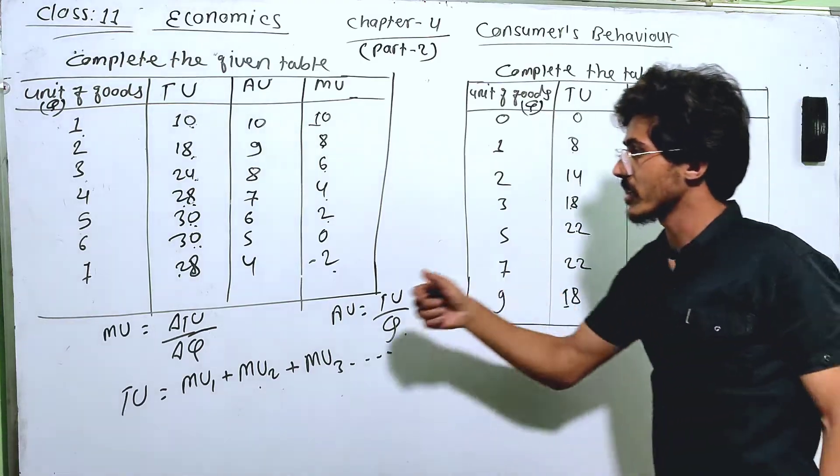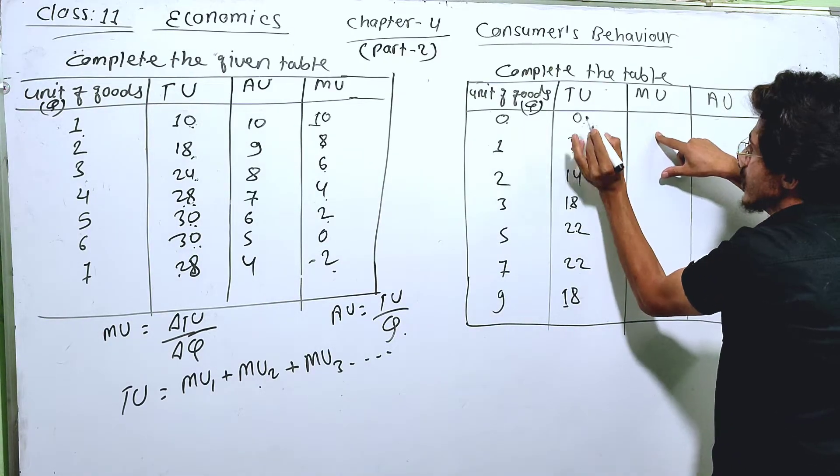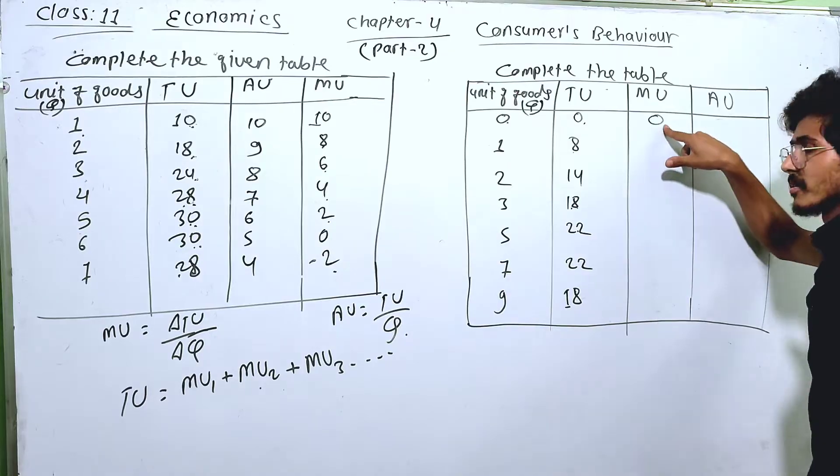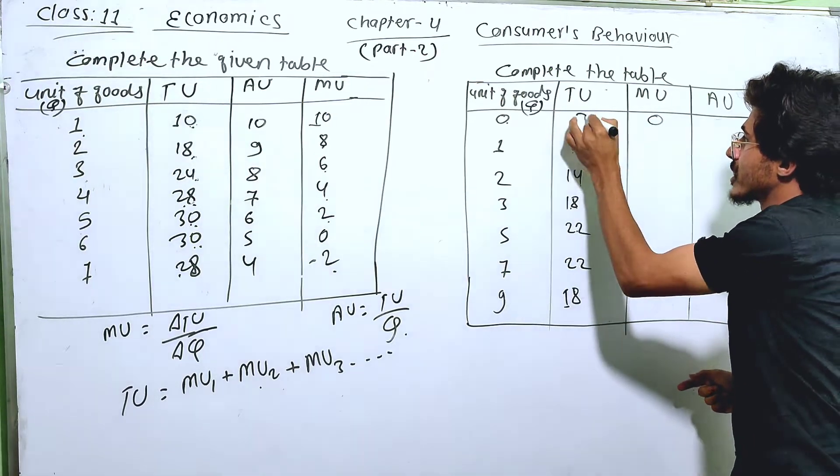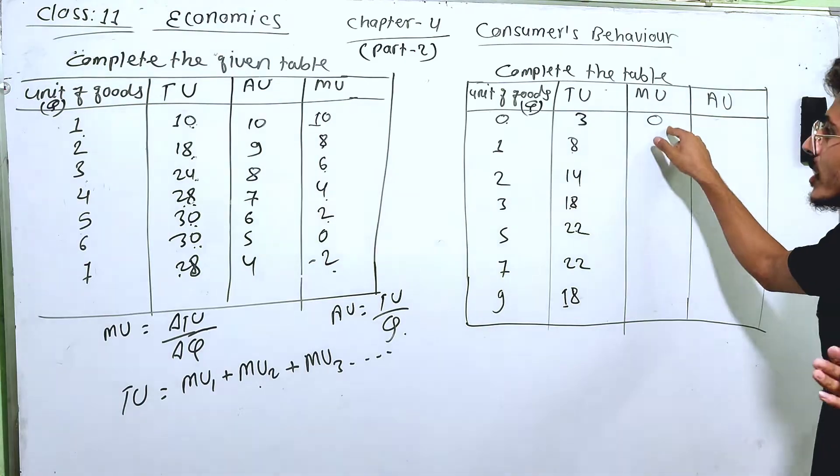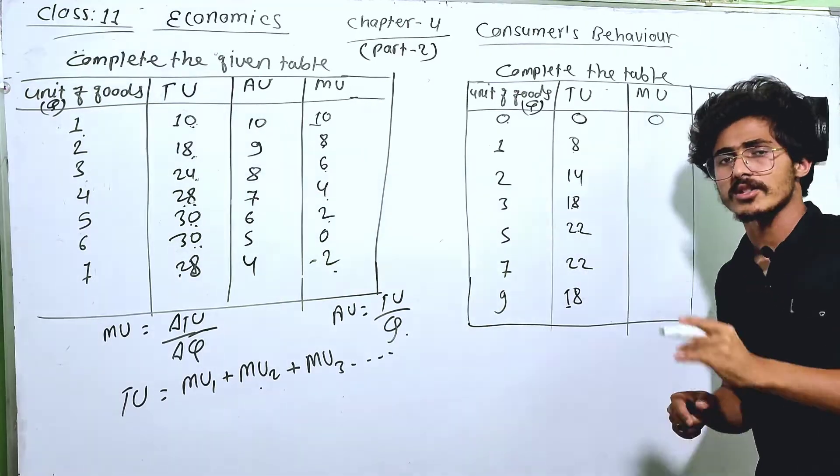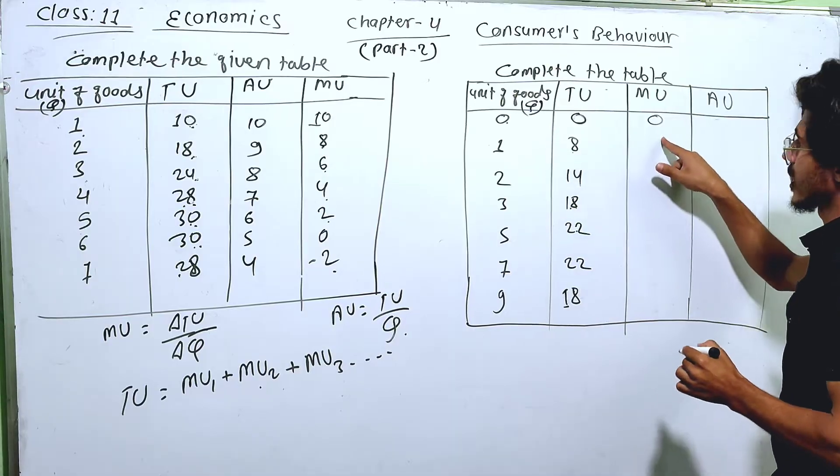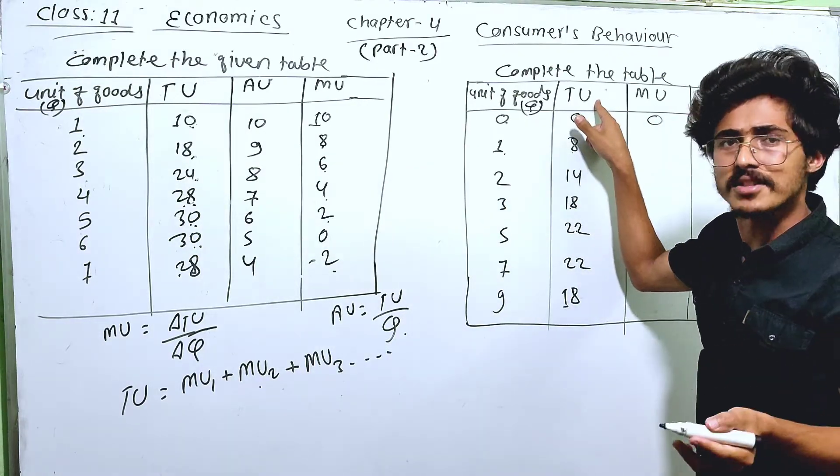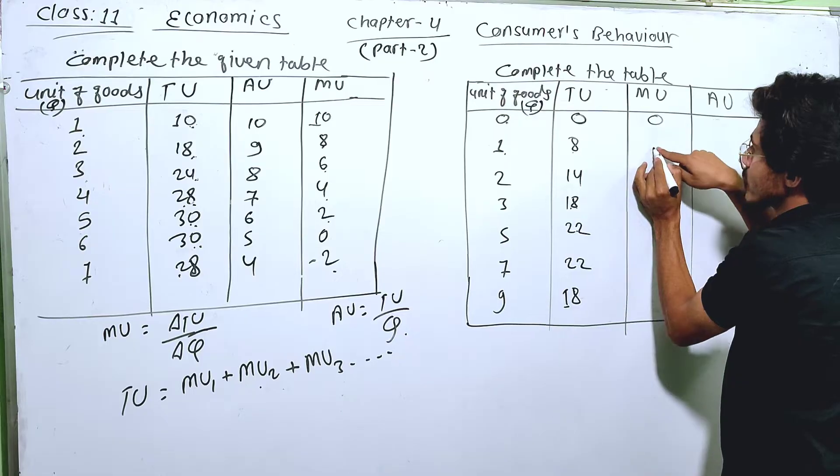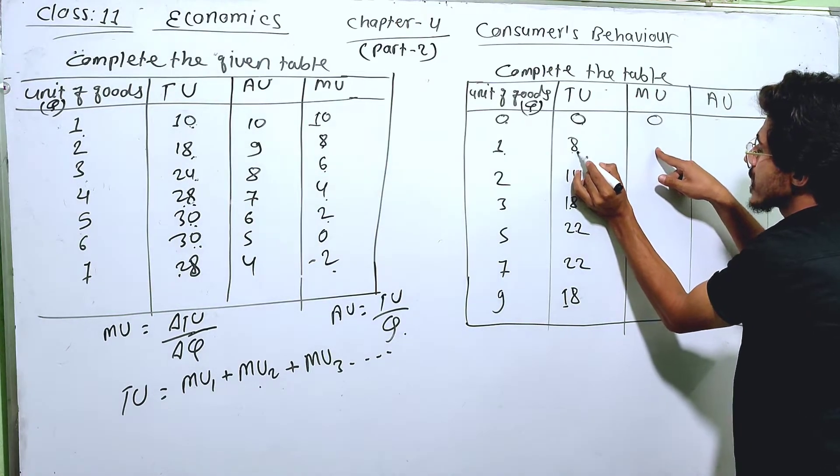Let me complete this question. In terms of unit of goods, TU, and MU. At the beginning, the unit is 0, then the TU is 0. The total utility is 0, then the marginal utility is 0. When the unit of goods is 1, the total utility is 8. The marginal utility is 8.